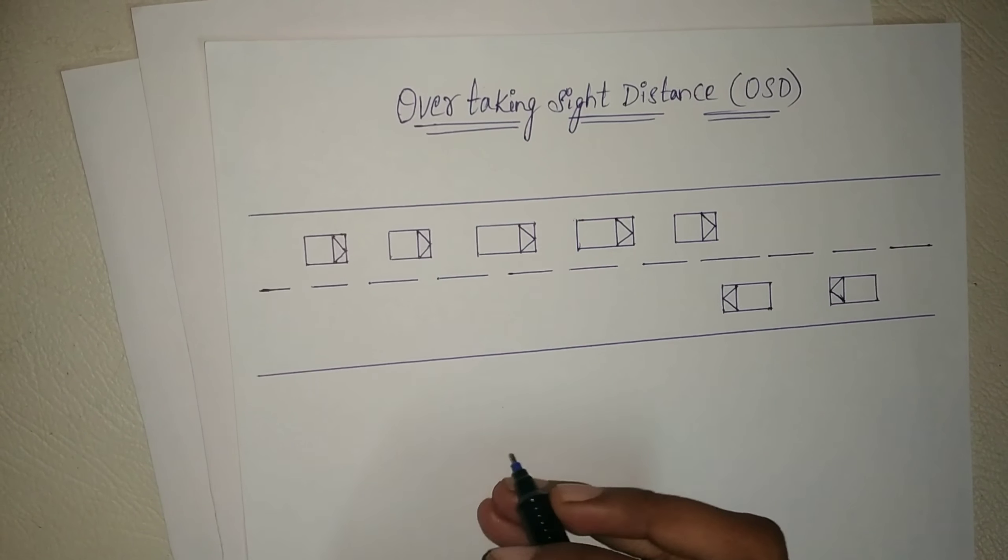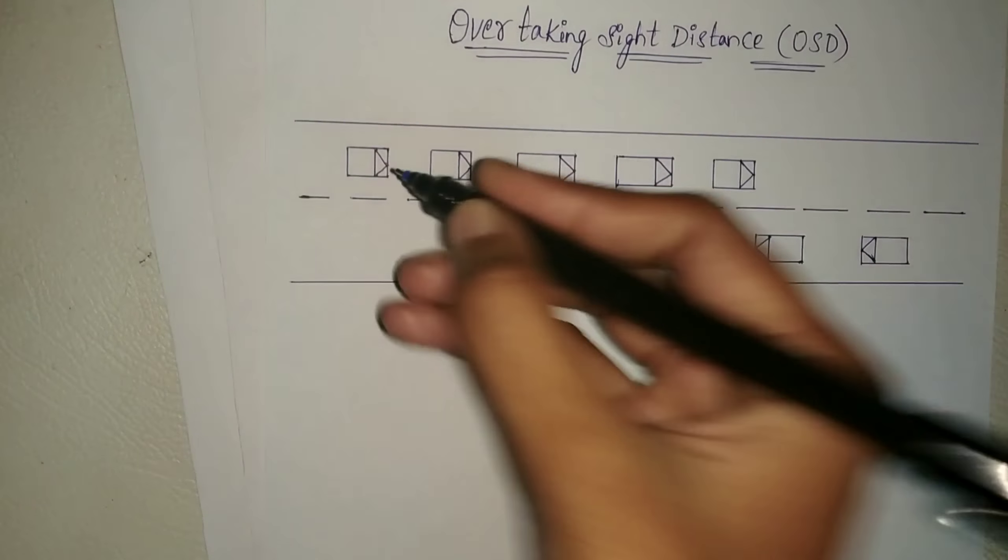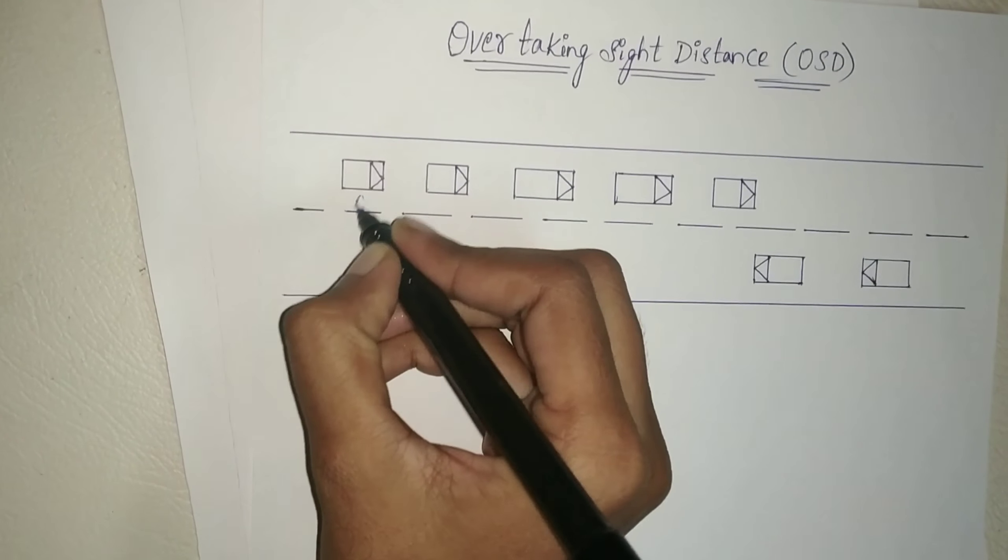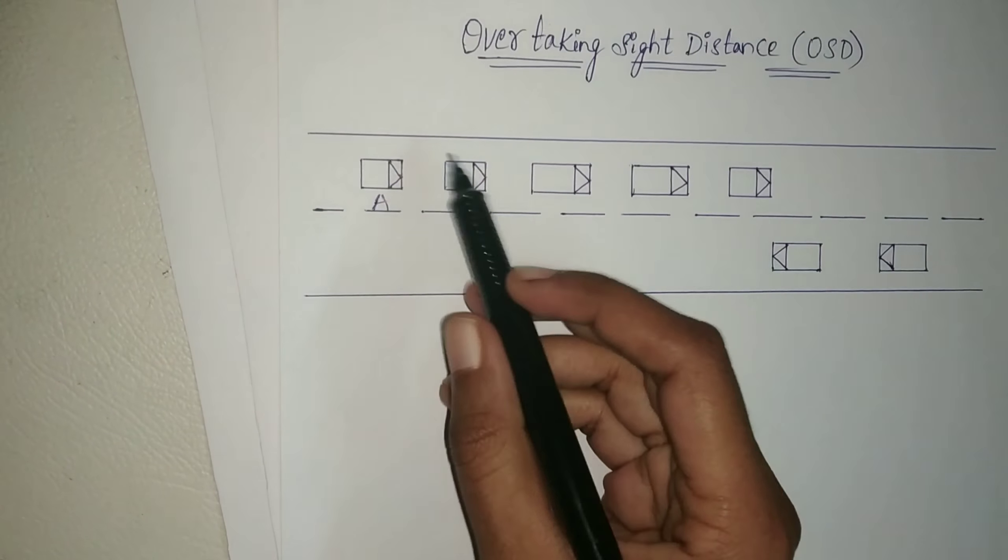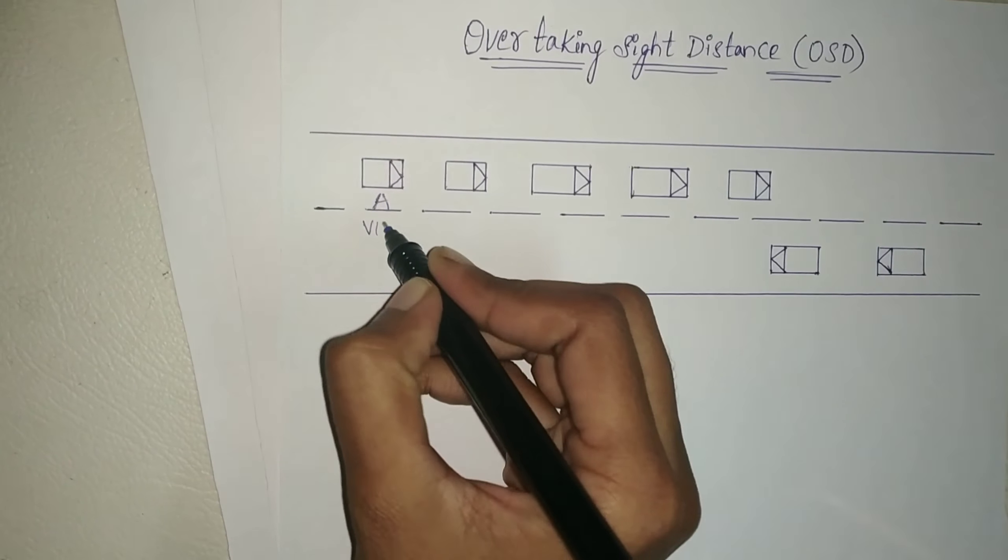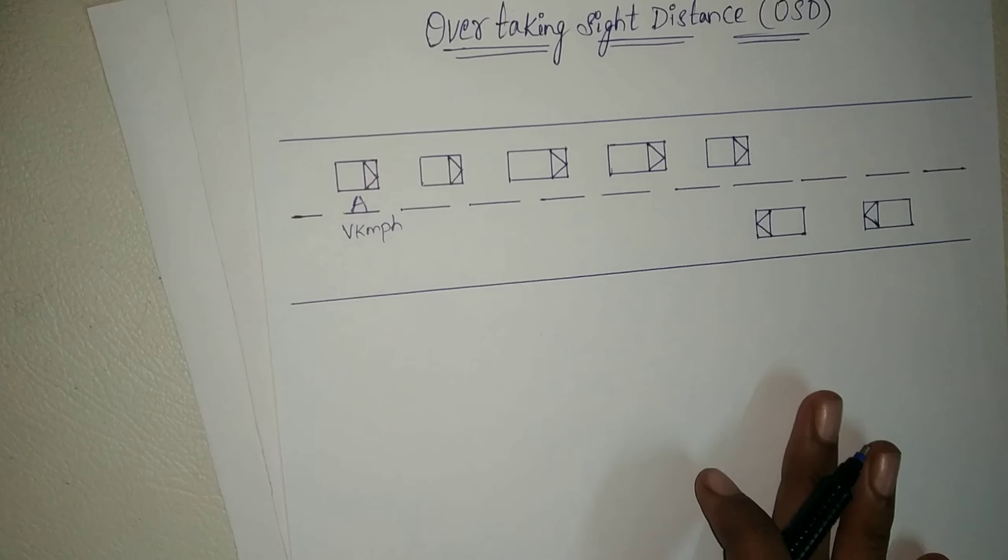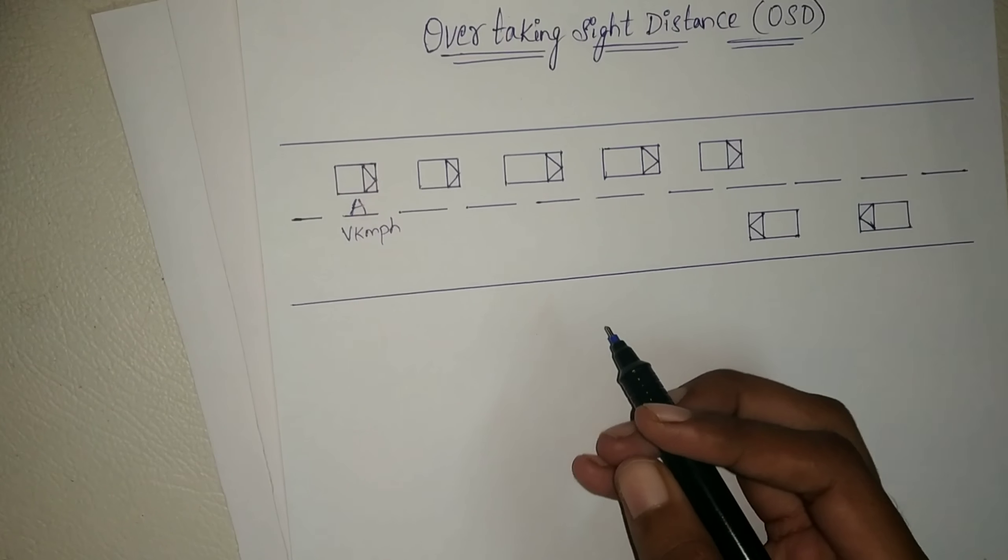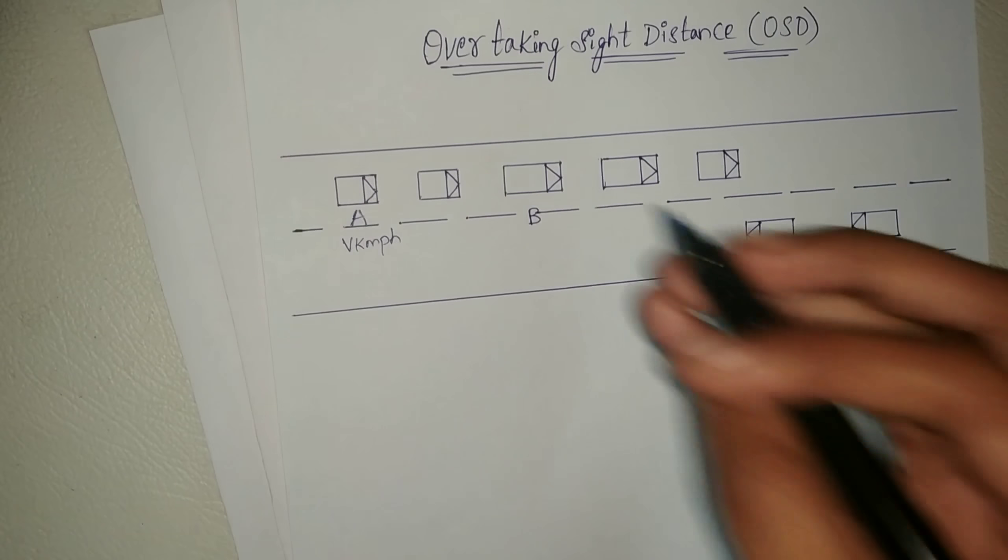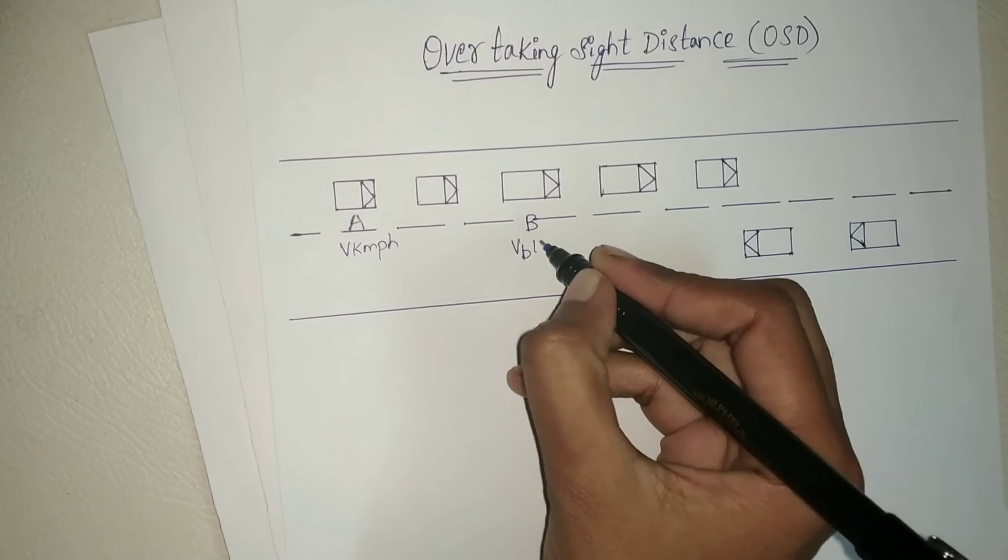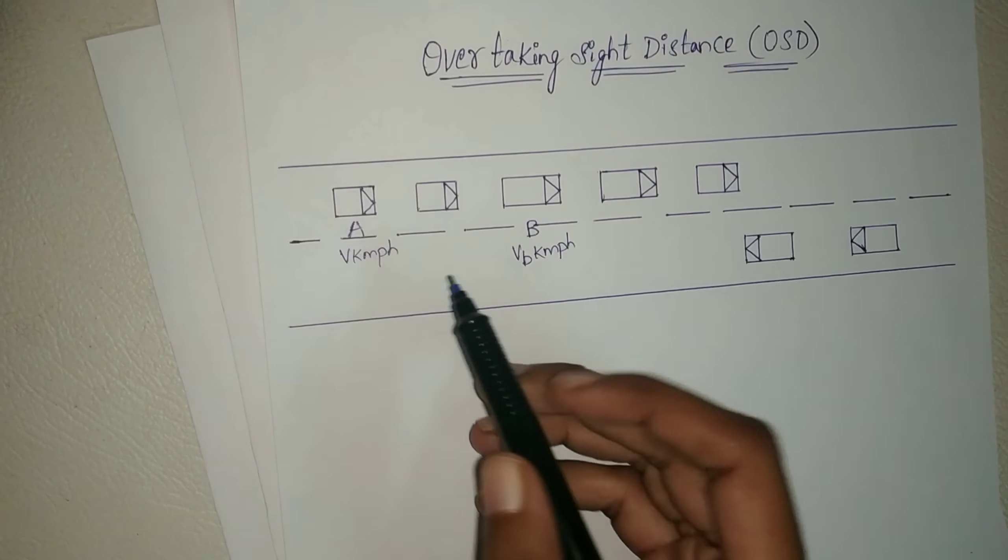Now we will see the formula for overtaking sight distance. Vehicle A, traveling at the design speed Vb kilometer per hour, decides to overtake the slower vehicle B moving at a speed Vb kilometer per hour.